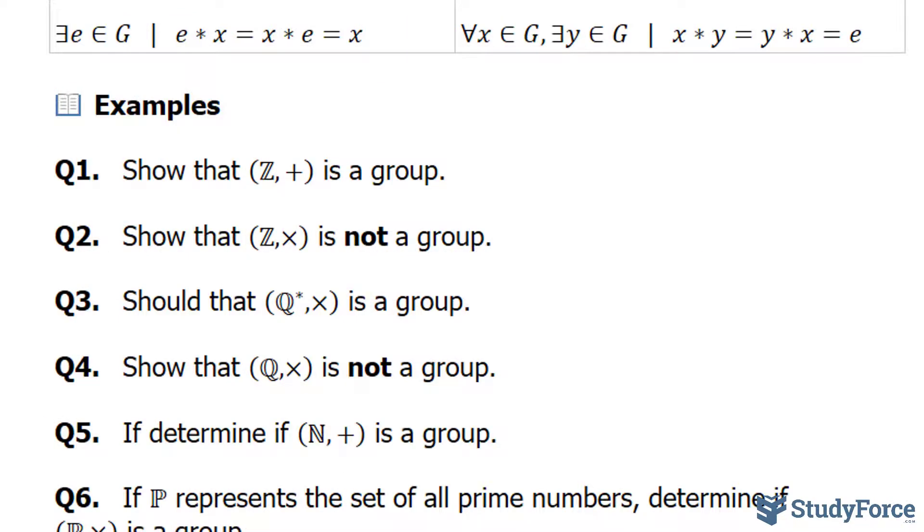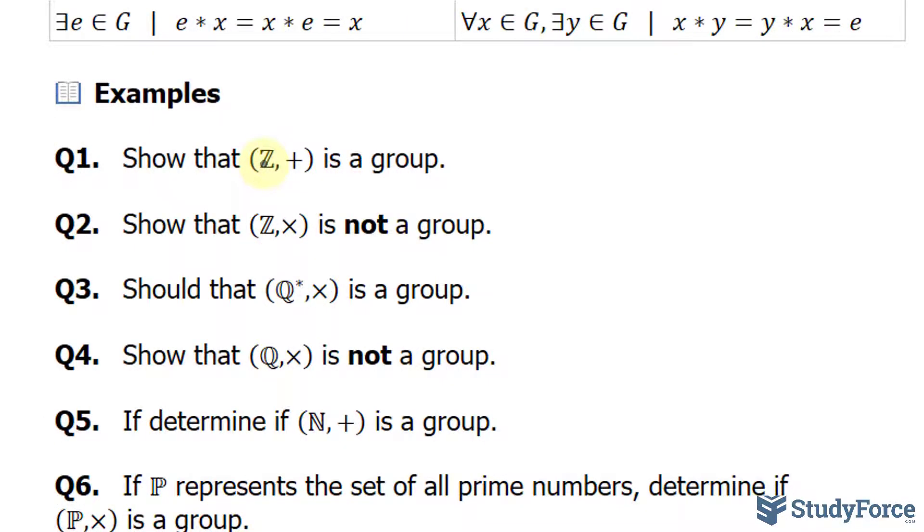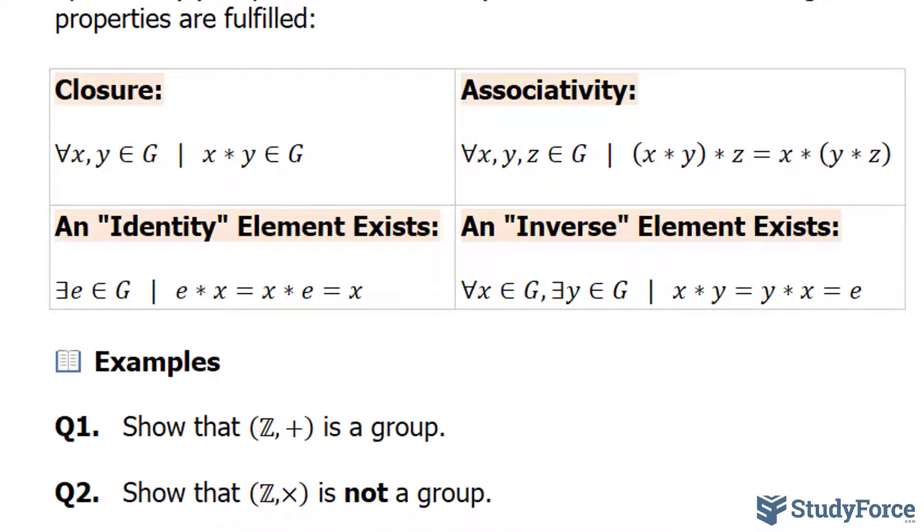Let's apply them to these examples. In example number one, we have to show that the set Z, which includes every integer, with the operation plus is a group. We have to go through each of these properties and make sure they're satisfied. Let's start with closure.